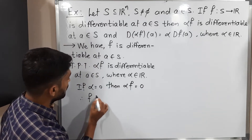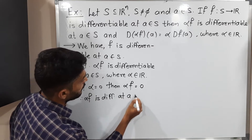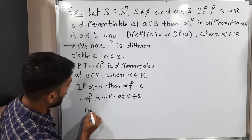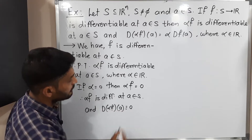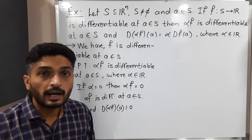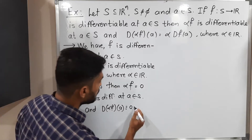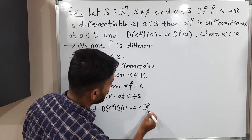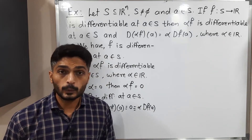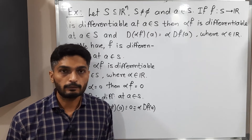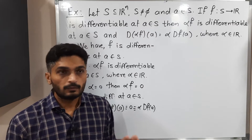Therefore αF is differentiable at A belonging to S. Let us find the total derivative D(αF)(A). Since α is zero, α times anything is zero, so the total derivative is also zero, which equals α·DF(A). Since α equals zero, zero times the total derivative — which is a linear transformation — is also zero. So in both ways we get zero.